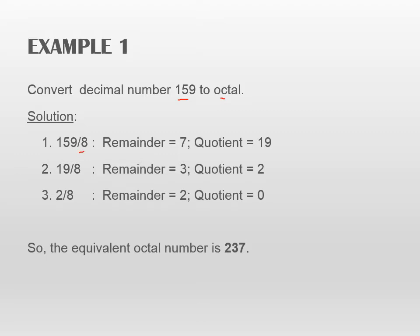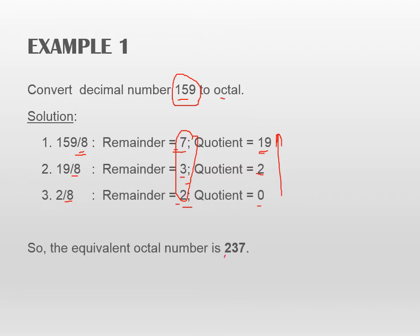You get remainder 3 and quotient 2. Then you get remainder 2 and quotient 0. So you have your remainder values, and when you write them in bottom to top order, that will form your octal number. So your octal number here is 237. The decimal number 159 converted to octal is 237.